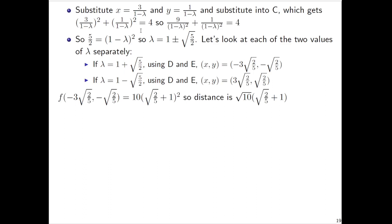Let's evaluate f at both of these (x,y)'s. We get the z value to be 10(√(2/5) + 1)². Remember that the f value is the square of the distance, so we should square root that number to get the distance.